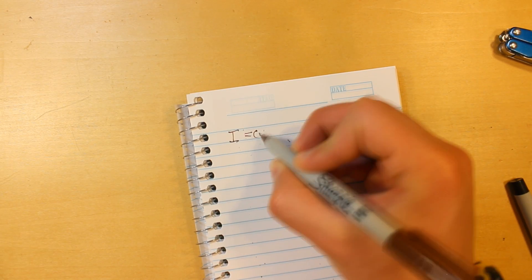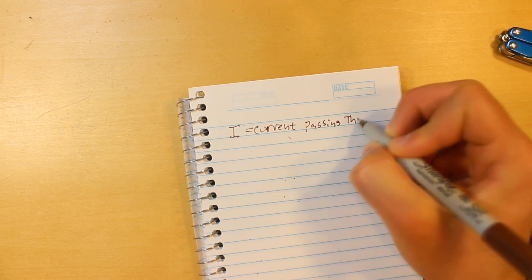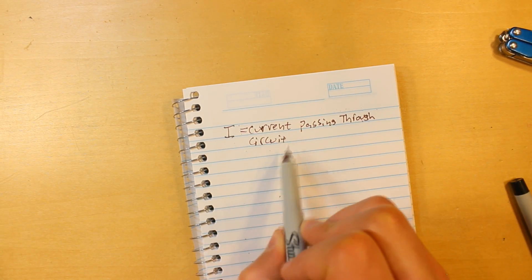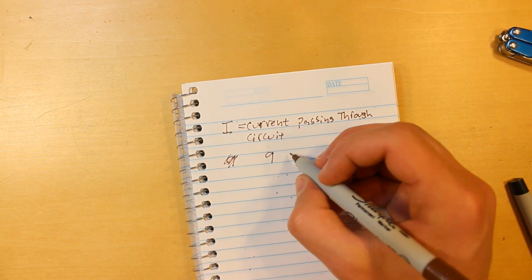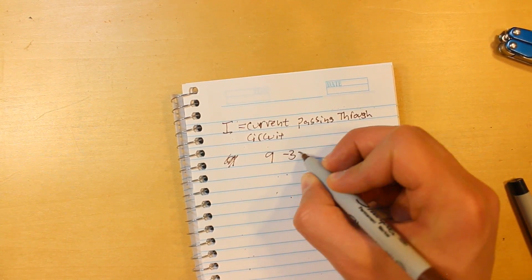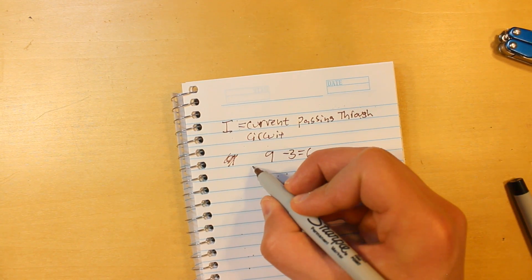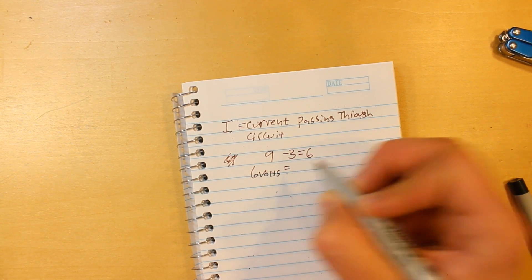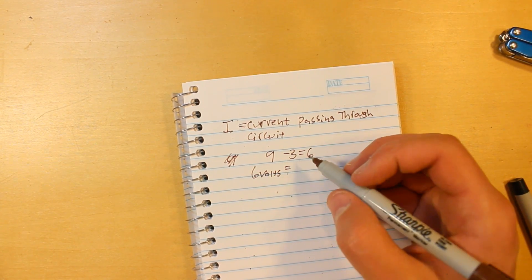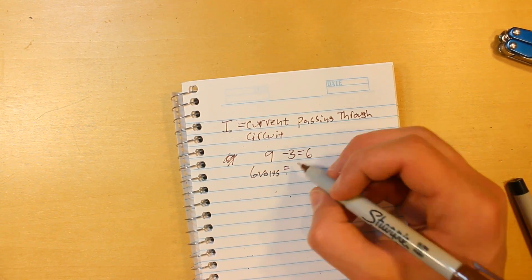Okay, so the value of I is the amount of current passing through this circuit. So say we have the 9 volt battery supplying an LED which takes 3 volts, so that equals 6. So 6 volts equals, and let's say the LED takes 30 milliamps.